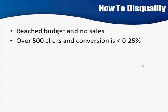Not worth it. The exception to the rule is if it's an extremely high-dollar product — which there are not a lot of on ClickBank. But if it's a very high-dollar product yielding an enormous commission, like a $1,000 product where they're giving you half, that's a totally different story. But for the most part, this is the rule: 500 clicks or more and conversion is less than a quarter percent.